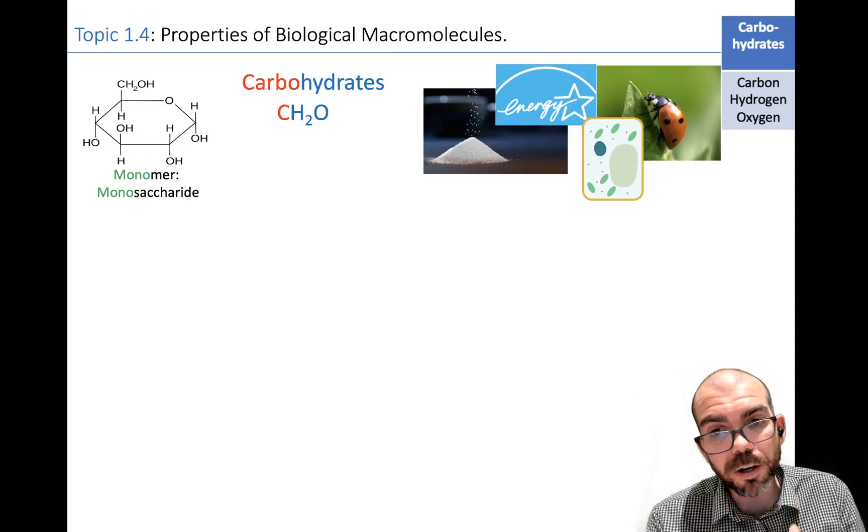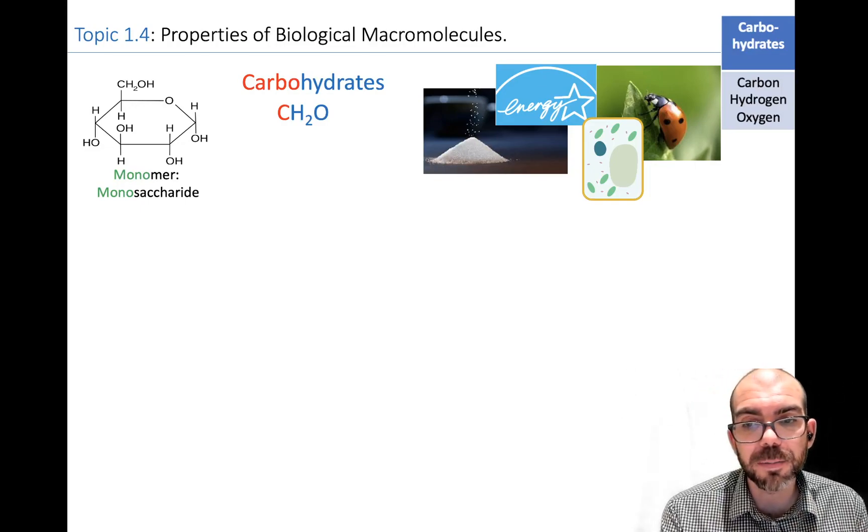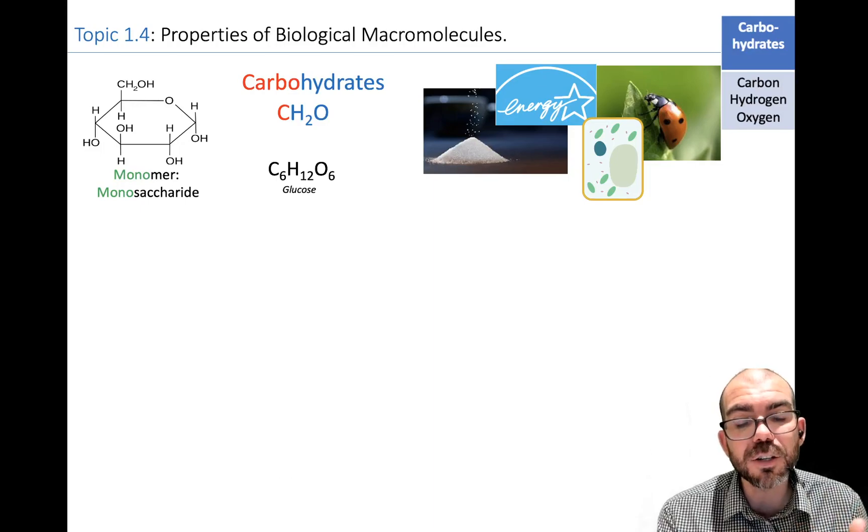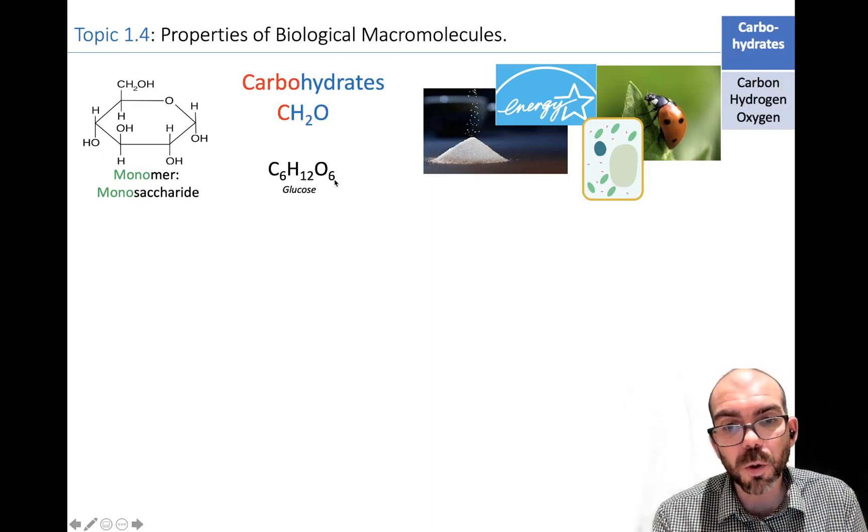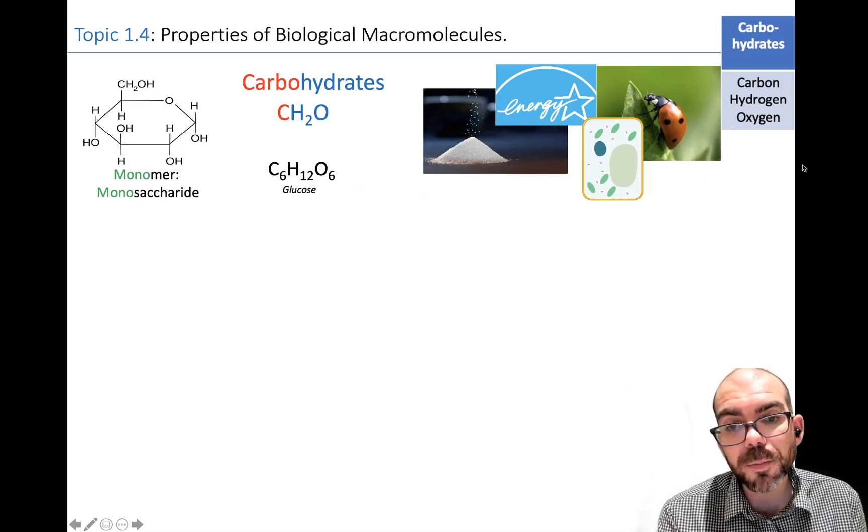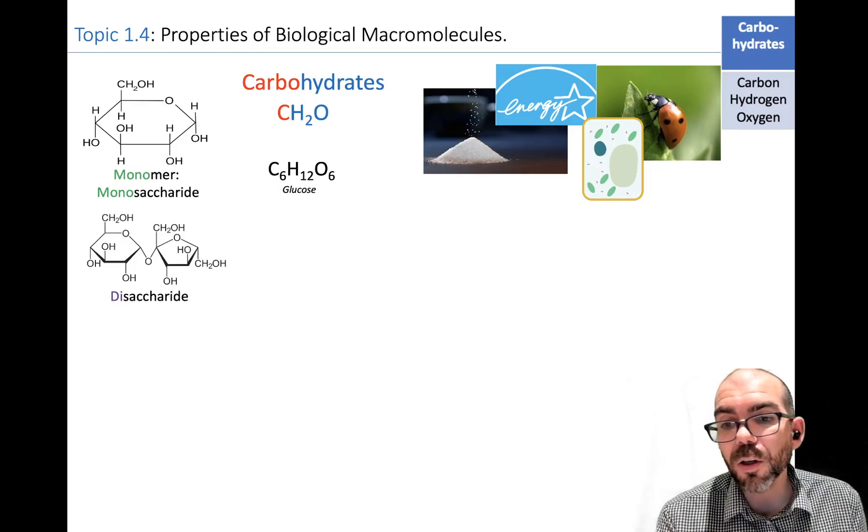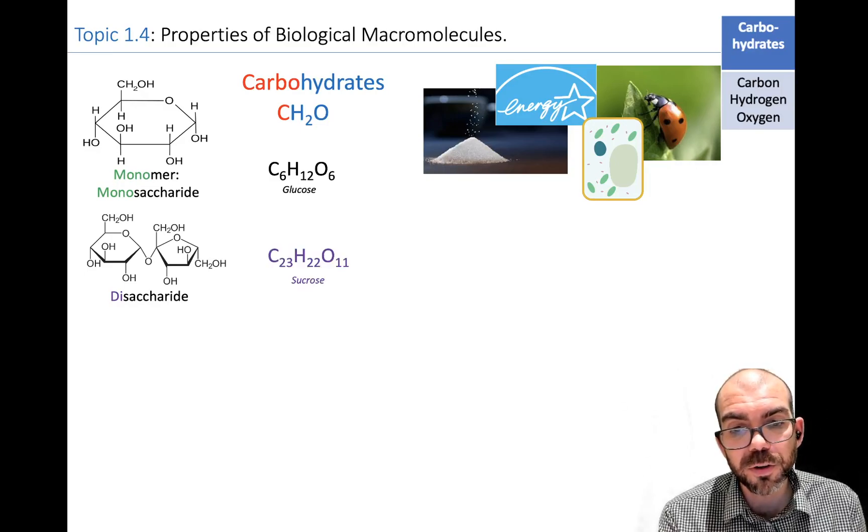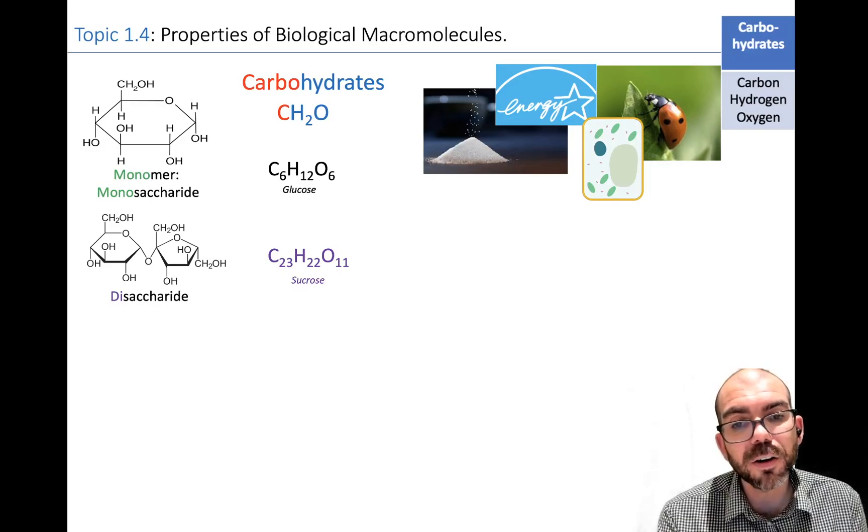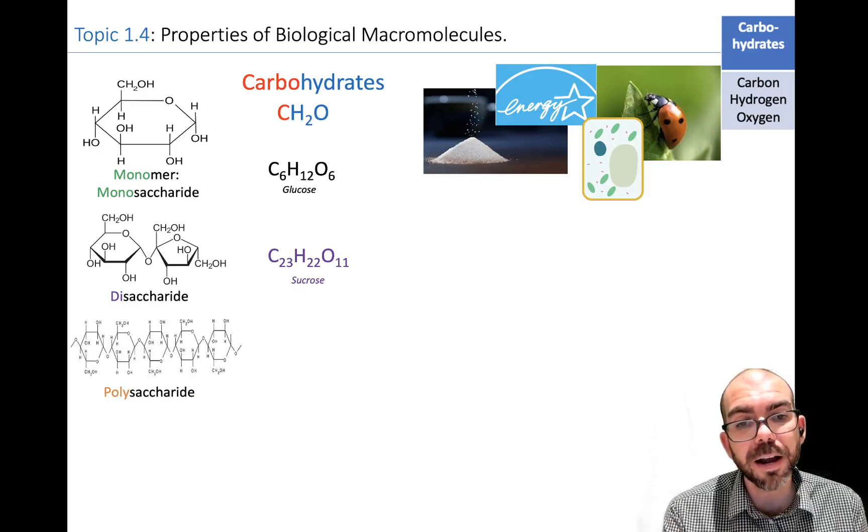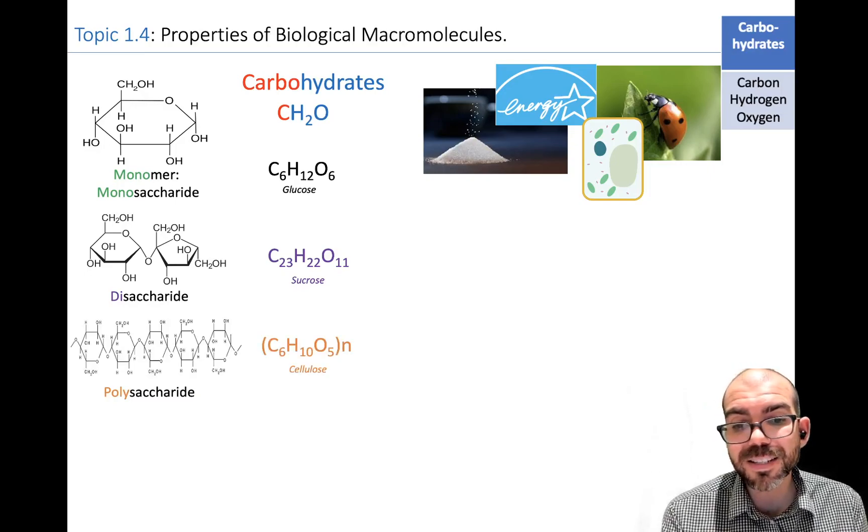If I have a monomer, it can be one unit that I call a monosaccharide. Saccharide means sugar. Mono means one. And here's the molecular formula for the one I'm showing you, glucose. It follows that CH2O formula. For every one carbon, there's one oxygen and two hydrogen. C6H12O6. If I have two monomers bound together in the case of carbohydrates, we call that a disaccharide. Di is two, saccharide, sugar. And here's the molecular formula for sucrose. It roughly follows the same formula. There can be deviation at times. In biology, there's always exceptions to every rule. And if I were to combine more than two sugars, I would have a molecule that we call a polysaccharide, poly meaning many, saccharide sugar. And this is cellulose.